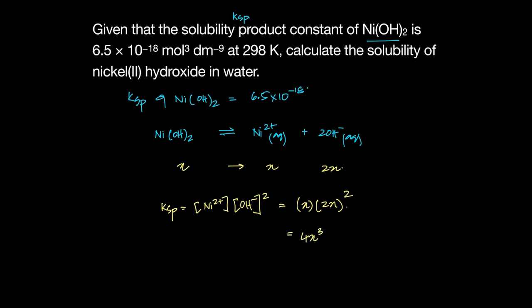And that's the value for KSP and we already know the value for KSP. So we're going to make 4X³ equal to the value for KSP and then solve for X. So how do I solve for X? I first divide it by 4 and then do a cube root here, basically.